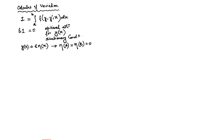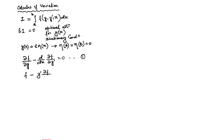This weak variation vanishes at the boundary — that is the very important property that we use. Once we use this expression, we derived two very important equations. One equation is the first equation, and then we have f minus y' ∂f/∂x equal to constant, which is the second equation.